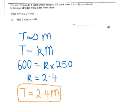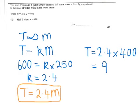Now using that, we need to find t when m is 400. So t equals 2.4 multiplied by 400, which gives us t equals 960. So that's part A of our question done.